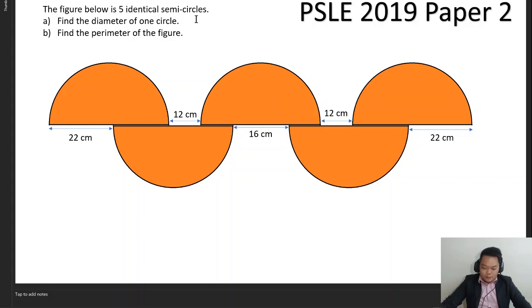The figure below shows five identical semicircles. Find the diameter of one circle and find the perimeter of the figure. If you would like to try this on your own first, pause the video because I'll begin my explanation now.